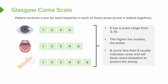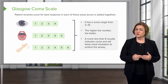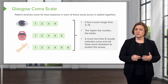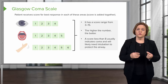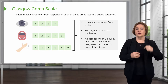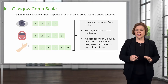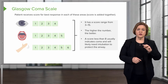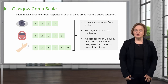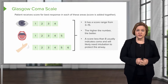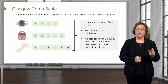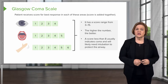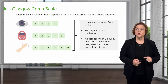A score less than eight usually indicates a coma — that's a really bad sign. Make sure you note that the higher the score the better, and remember that a score less than eight usually indicates coma. That means the patient probably can't breathe on their own, so they'll need to be intubated — where we put a special tube in their mouth and down into their airway — and connected to a mechanical ventilator. Repetition is your friend when learning new concepts: score range is 3 to 15, higher is better, and a score less than eight means big trouble, likely requiring intubation and a mechanical ventilator.